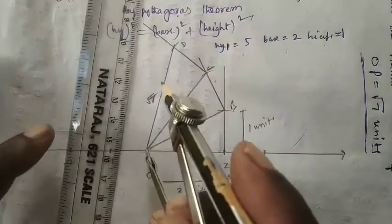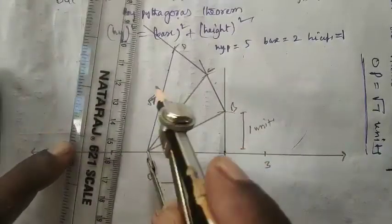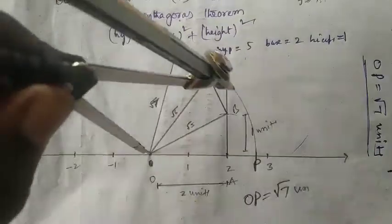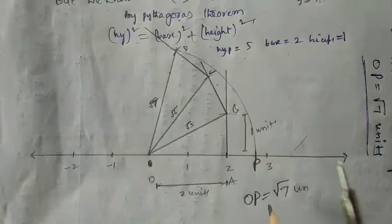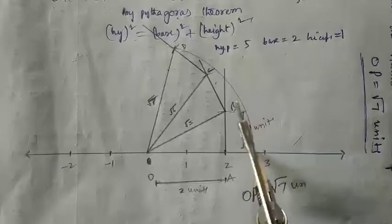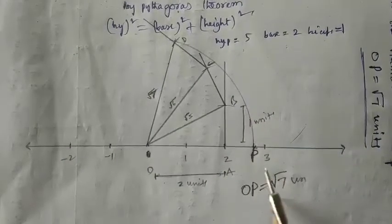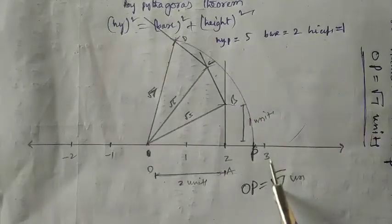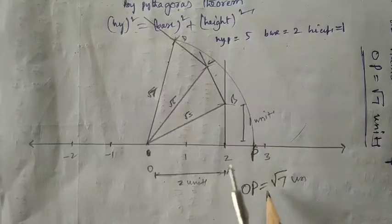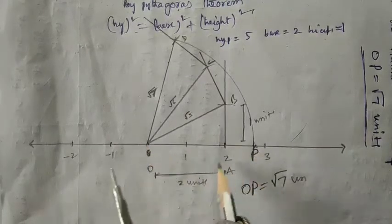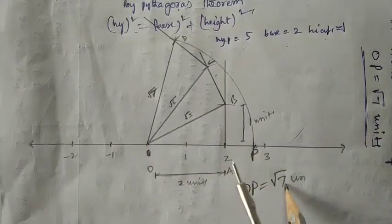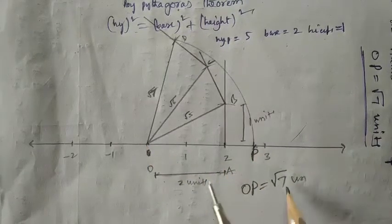Take OD as a radius. Draw an arc — this arc intersects the number line at P. OP is equal to root 7. This is the value of root 7 on the number line.